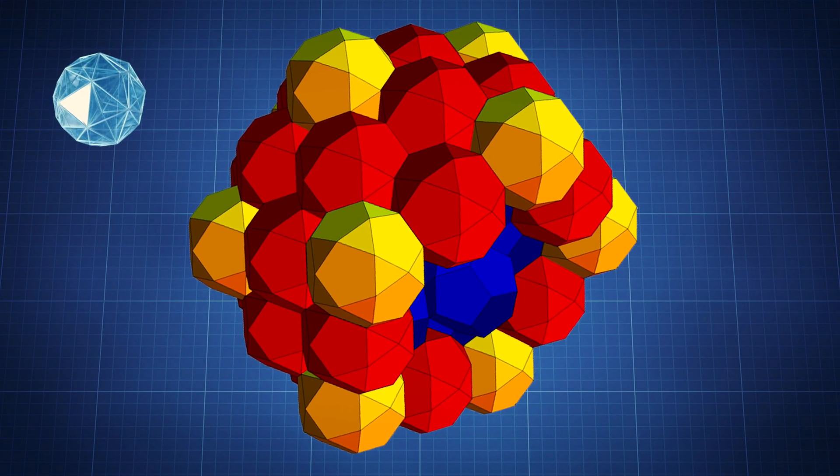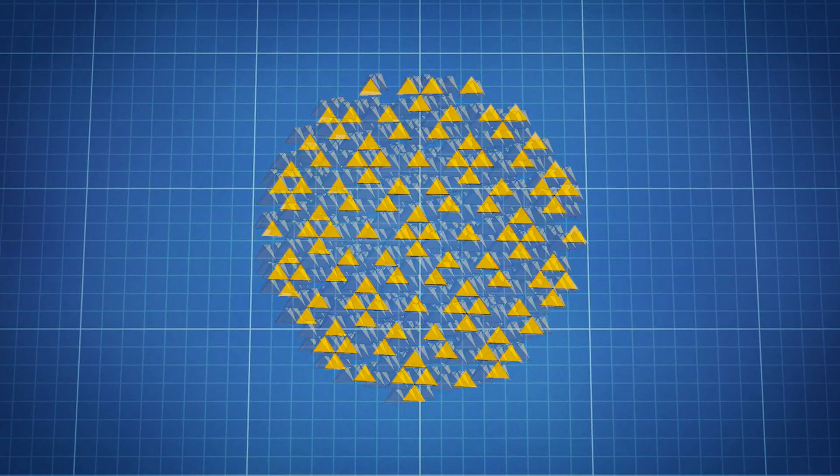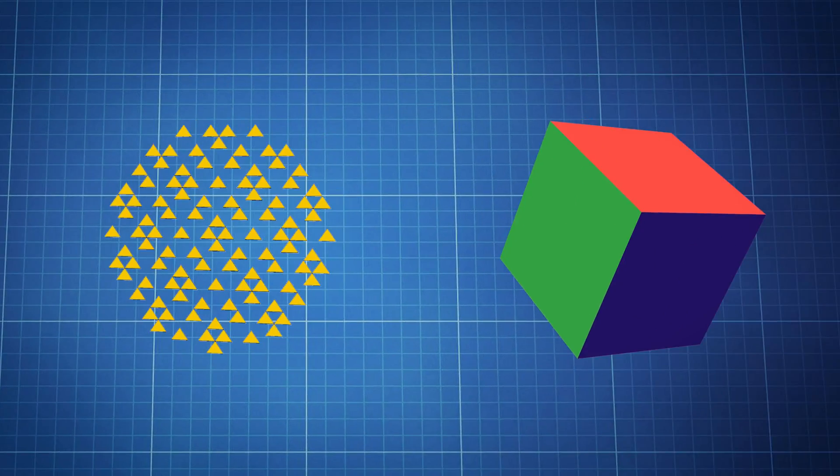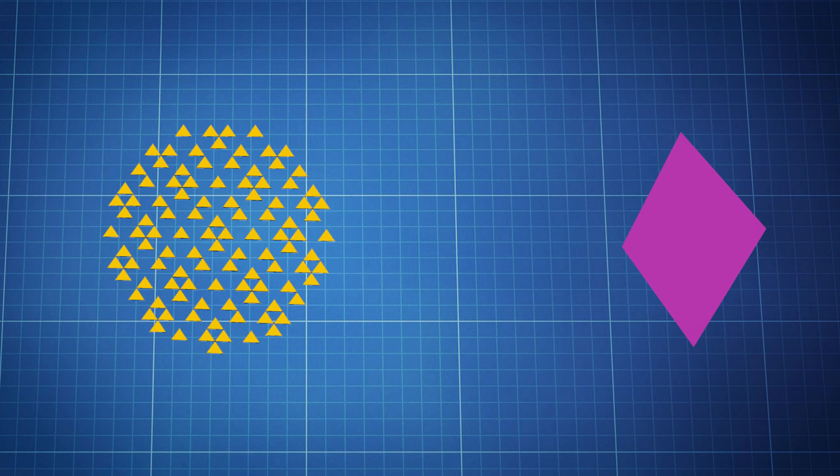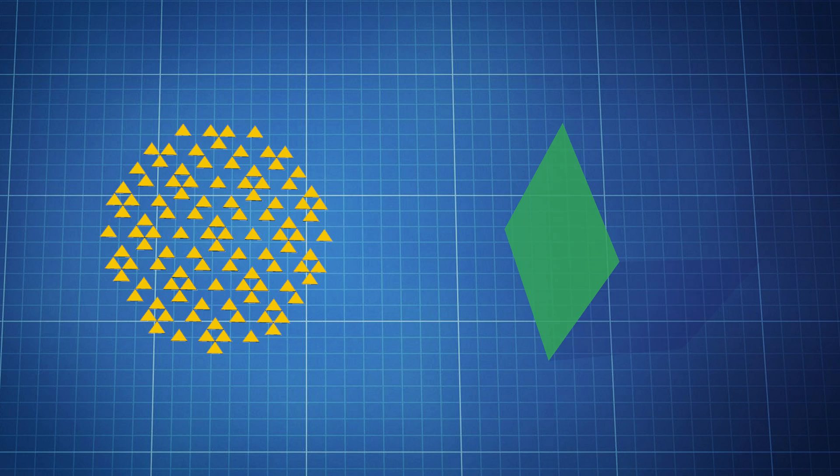But each tetrahedron lives in a different three-dimensional space next to its neighbor, in the same way that the different faces of a cube live in different two-dimensional spaces from the other faces of the cube.